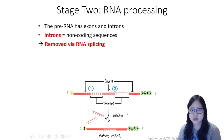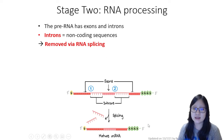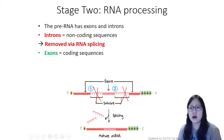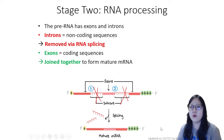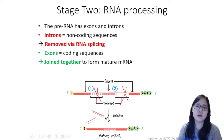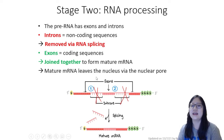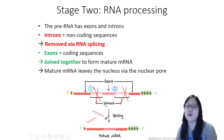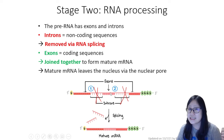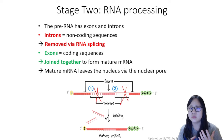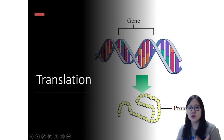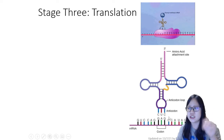The pre-mRNA has exons and introns. Introns are non-coding sequences that do not code for any protein and are removed via RNA splicing. Exons are coding sequences that are joined together to form the mature mRNA. Only after this processing is the final mature mRNA complete, and it can leave the nucleus via the nuclear pore. This mature mRNA then travels to the ribosome for stage three: translation.